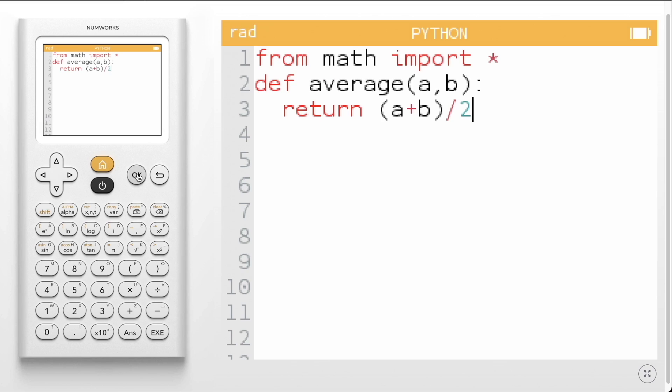The script editor is where you can write the algorithms for your program. For example, in this script, we define a function named average that has two arguments, a and b. The function returns the average of these two arguments.